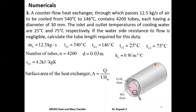Next problem: a counterflow heat exchanger through which passes 12.5 kg/s of air to be cooled from 540°C to 146°C contains 4200 tubes each having a diameter of 30 mm. Inlet and outlet temperatures of cold water are 25°C and 75°C respectively. Water side resistance to flow is negligible. Calculate the tube length required.